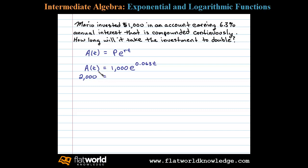So we'll replace the amount A(t) with two thousand, and that leaves us with an exponential equation where t is the only variable left, and that's the time it takes to double. So we need to solve for t.